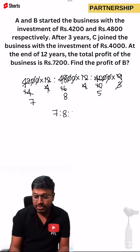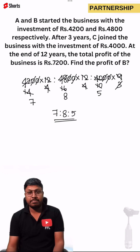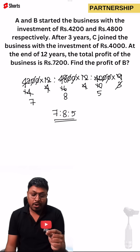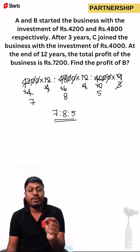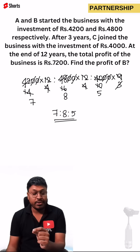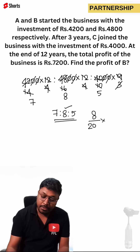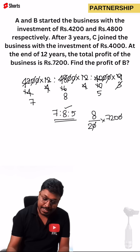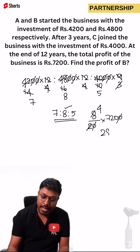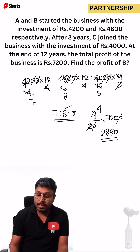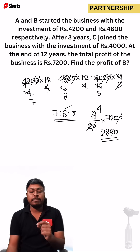Finally, the ratio of investment is 7:8:5. According to the question, our target is to find the profit of B. B's share in the ratio is 8, the total ratio is 20, and the total profit amount is 7,200. Cancelling gives a factor of 4, so 2,880 will be the total profit of person B.